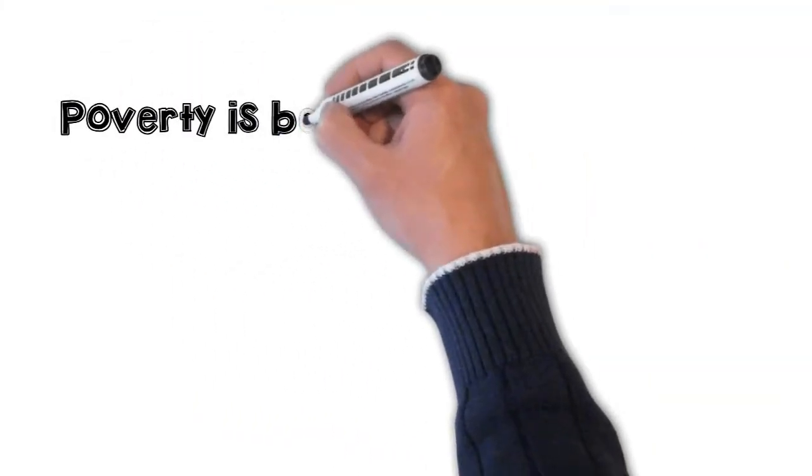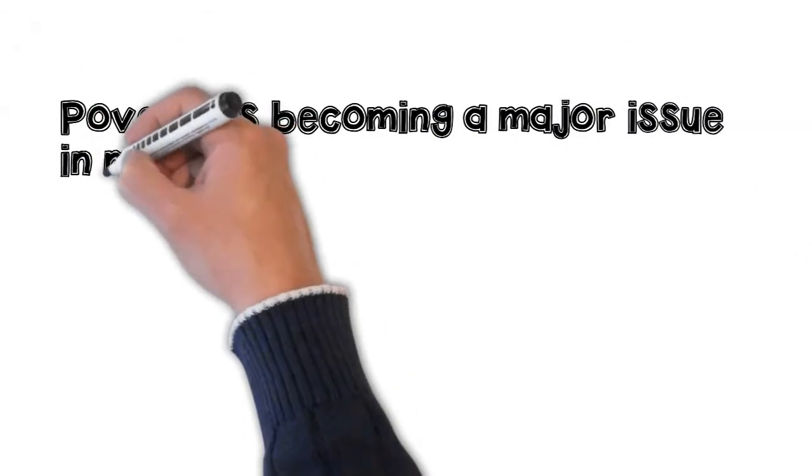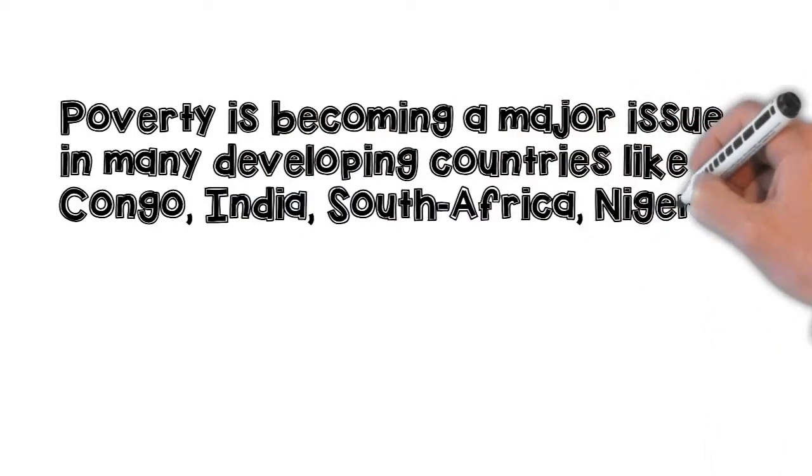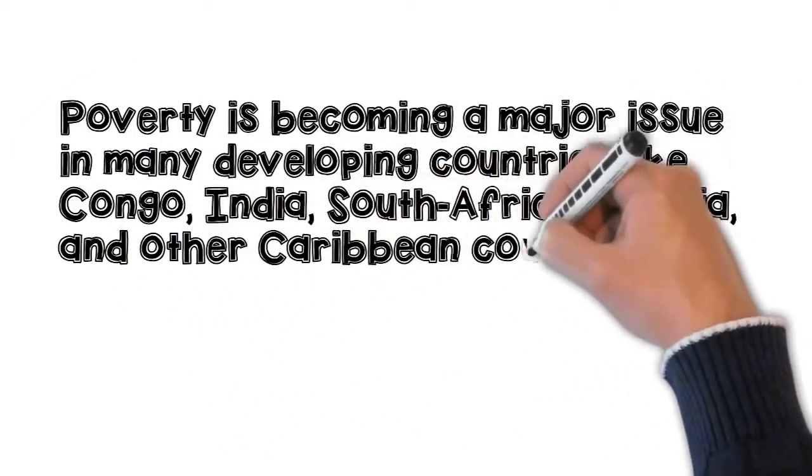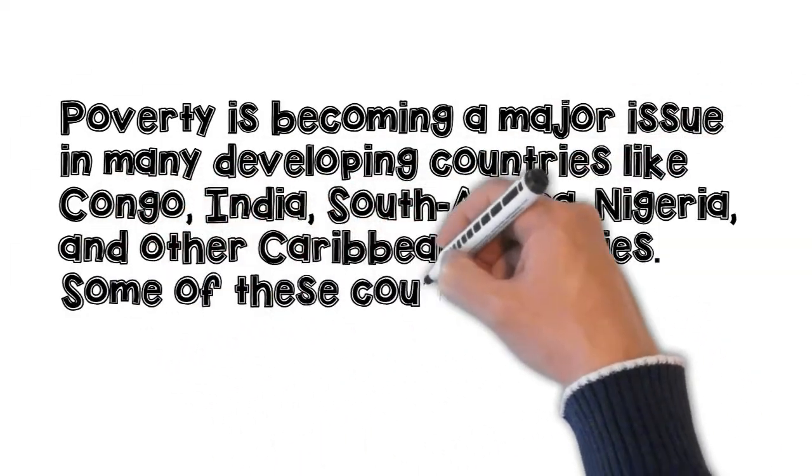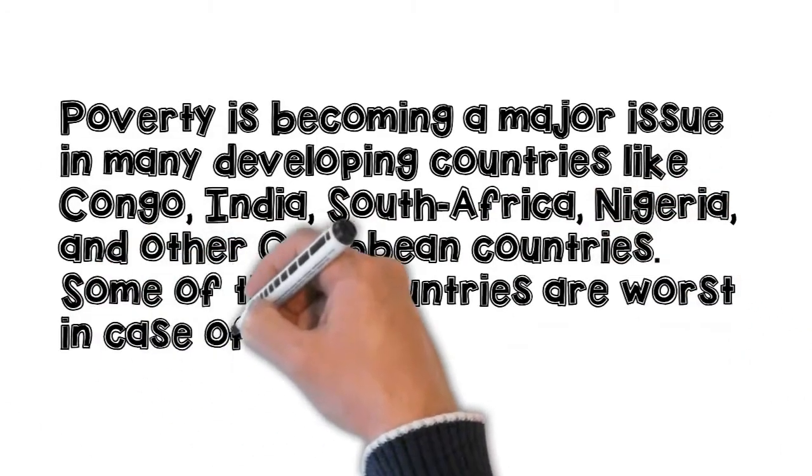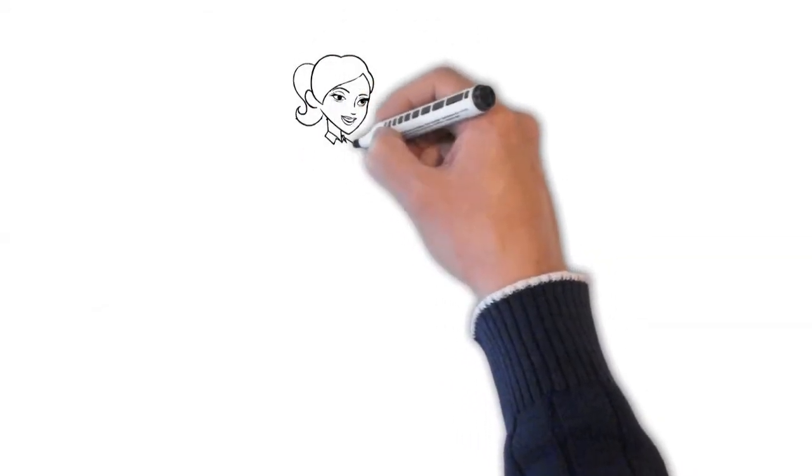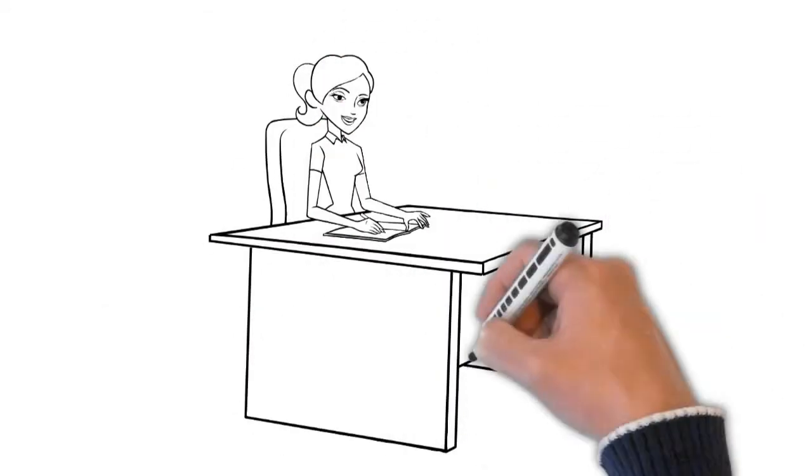For instance, in the poverty example you can write: Poverty is becoming a major issue in many developing countries like Congo, India, South Africa, Nigeria, and other Caribbean countries. Some of these countries are worst in case of poverty, like Guinea and Madagascar. Then write your thesis statement, discussed in the earlier part of this video.